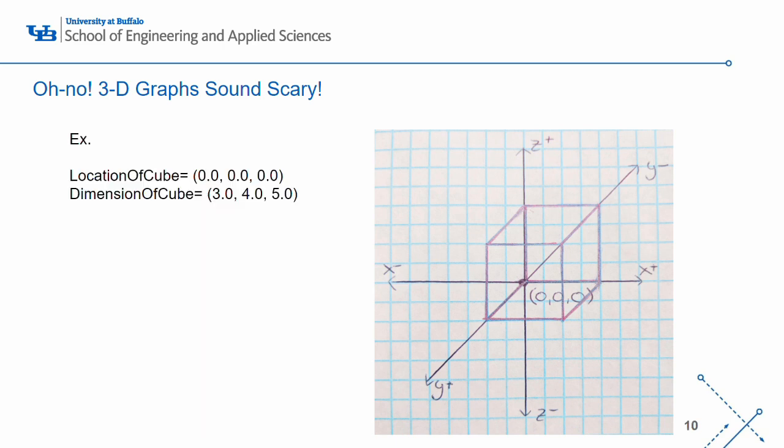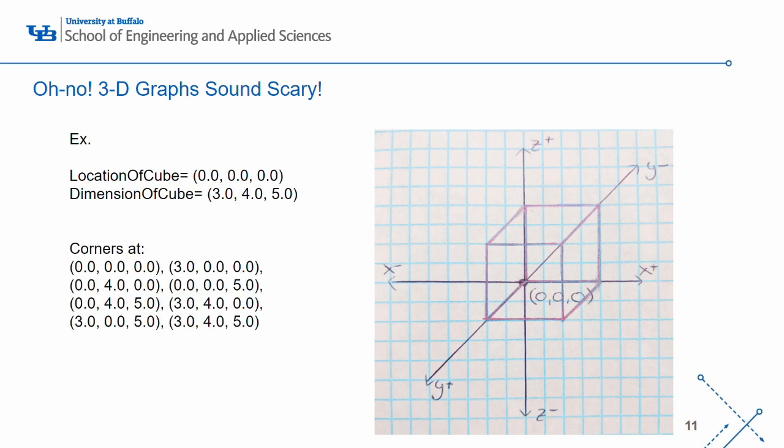So, if you have a 3D cube at the location (0,0,0) and with a dimension of (3,4,5), the corners of the cube would be (0,0,0), (3,0,0), (0,4,0), (0,0,5), (0,4,5), (3,4,0), (3,0,5), and (3,4,5).